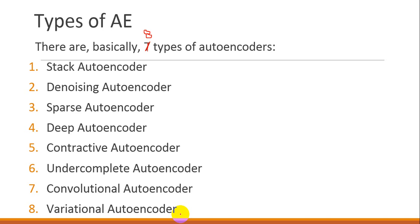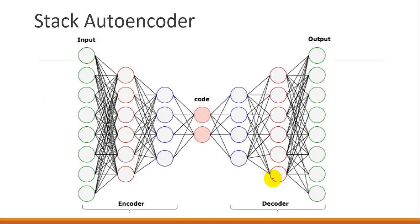The eight types are: stacked, denoising, sparse, deep, contractive, undercomplete, convolutional, and variational autoencoders. First of all, let's talk about the stacked autoencoder. As the name suggests, the stacked autoencoder is one where the quantity of hidden nodes is more than the input nodes.